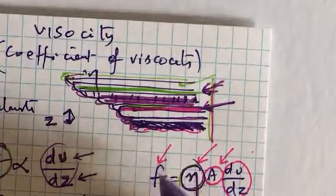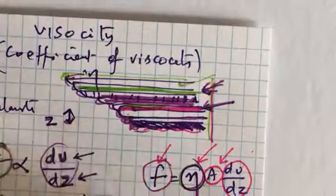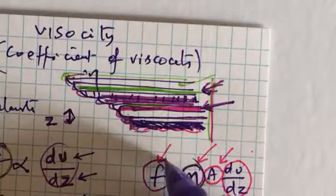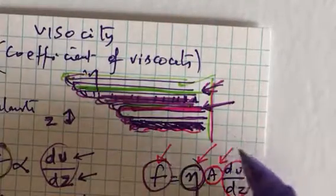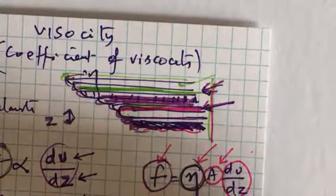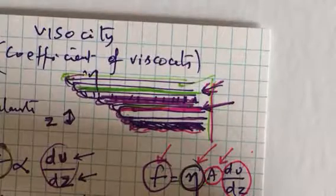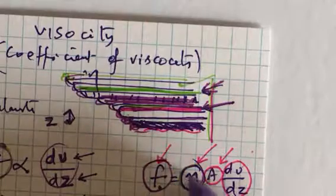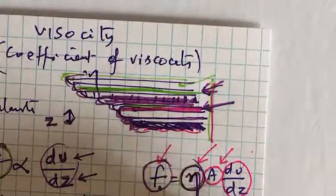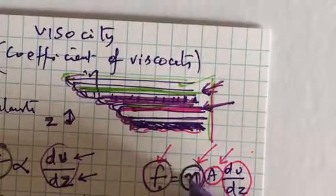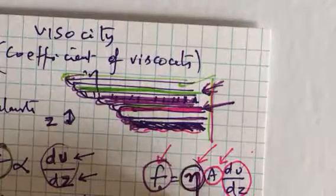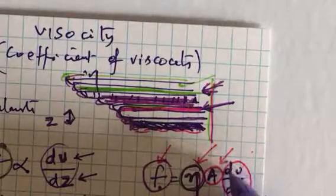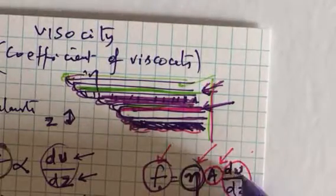This eta is actually the force required to maintain the flow of a liquid, or it is exactly equals to opposing force. Unless you overcome the opposing force to the flow of a liquid, you can't maintain the flow. Therefore, this force experienced by a liquid to sustain its flow when the area of contact is unity, when the velocity gradient is also unity.